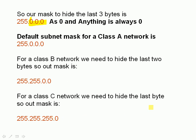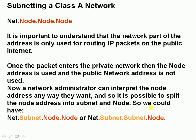Remember, anything ANDed with a zero is always a zero. So let's have a look at subnetting a class A network. A class A network consists of the first byte for the network and three bytes for the node. It's important to understand that the network part we can't do anything with — it's allocated and we can't touch it. It's used to route packets on the Internet, and once the packet enters the private network, the public network address is not used.